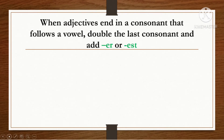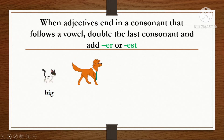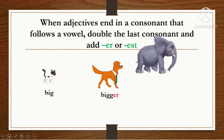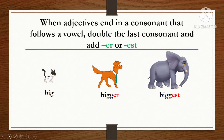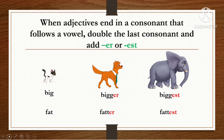When adjectives end in a consonant that follows a vowel, double the last consonant and add -er or -est. For example: big — the adjective big ends with a consonant G following vowel I, so we double G and add -er for comparative (bigger) and -est for superlative (biggest). Another example: fat, fatter, fattest.